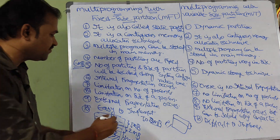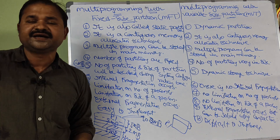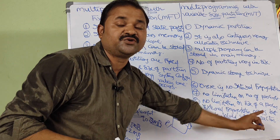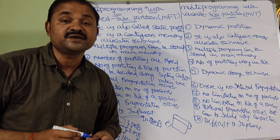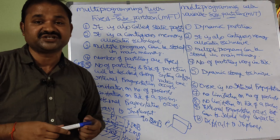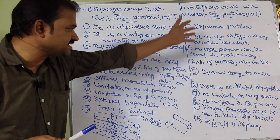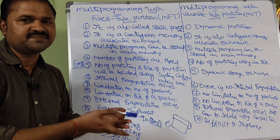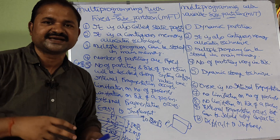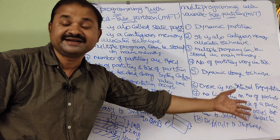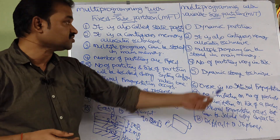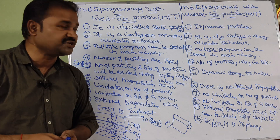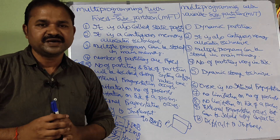The tenth point: MFT is easy to implement because the system designers already know the number and size of all partitions at design time. MVT is difficult to implement because it uses dynamic memory allocation — the system designer does not know in advance the memory requirements of each process, making it more complex to design. This concludes the comparison of multiprogramming with fixed size partition versus multiprogramming with variable size partition.